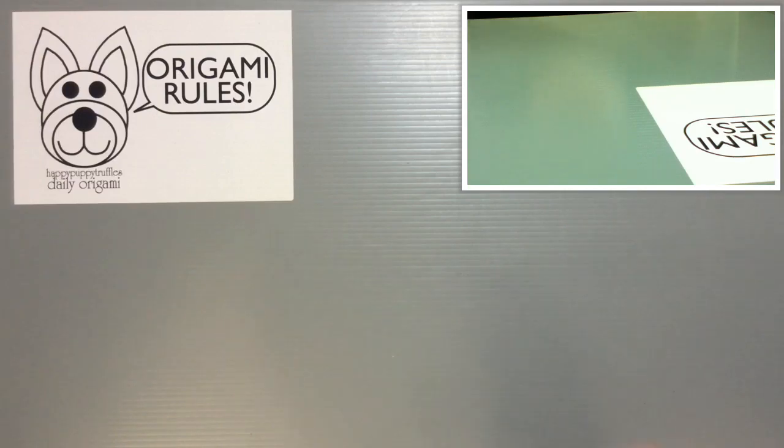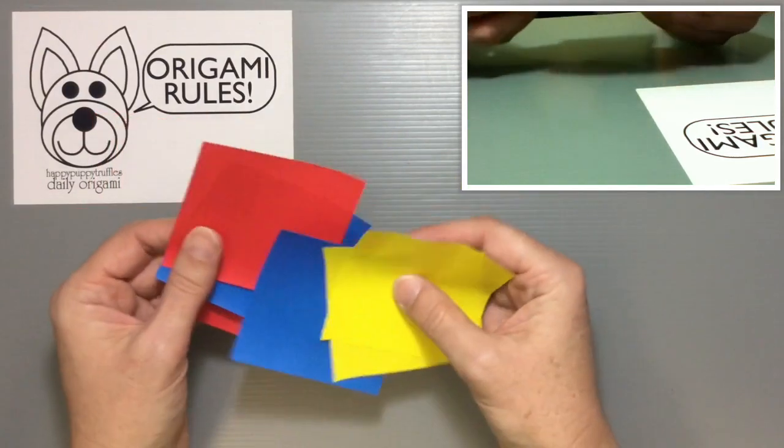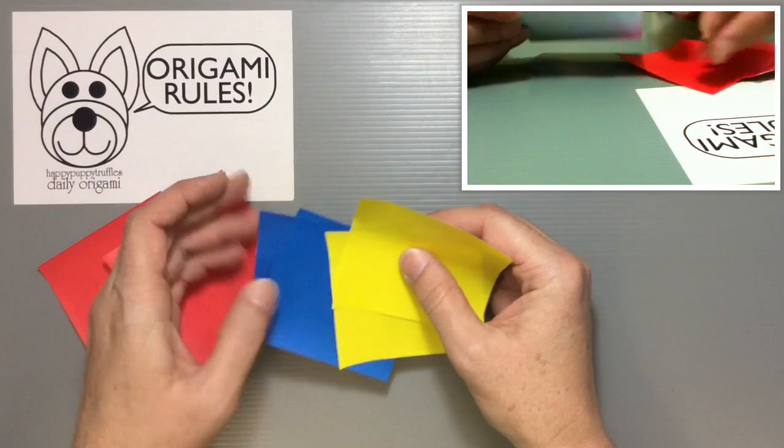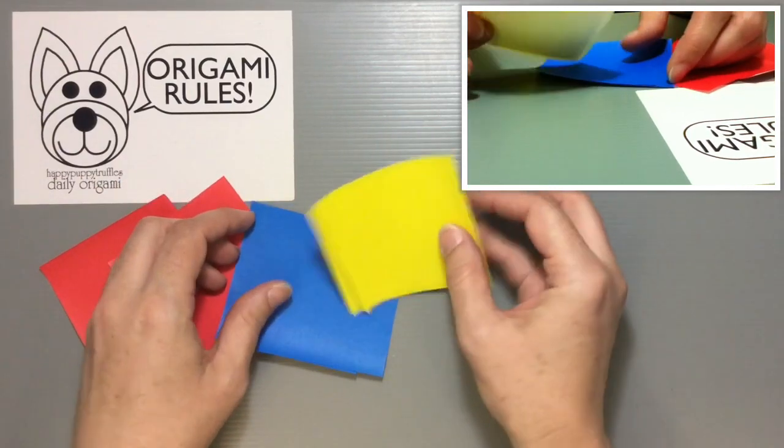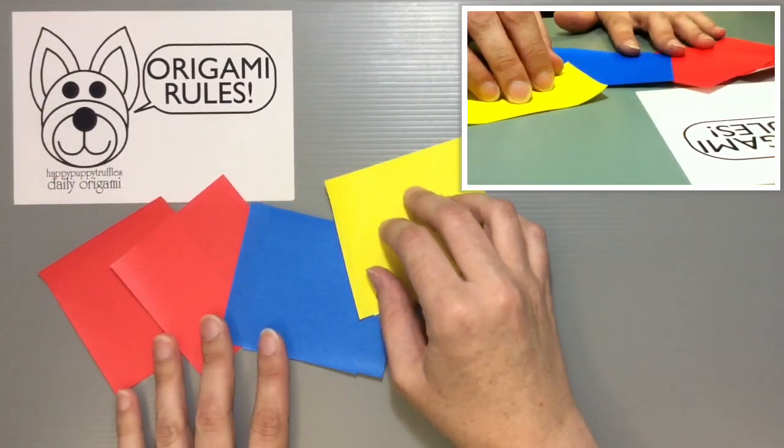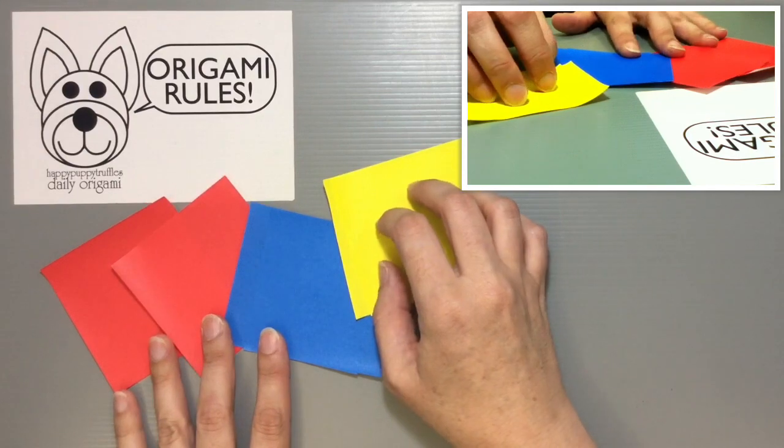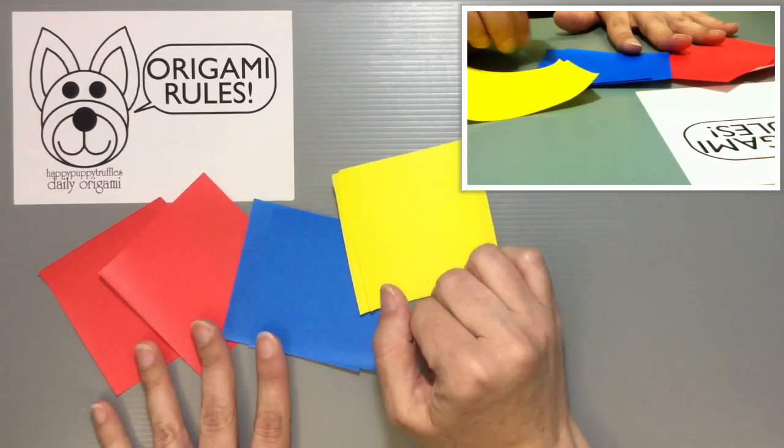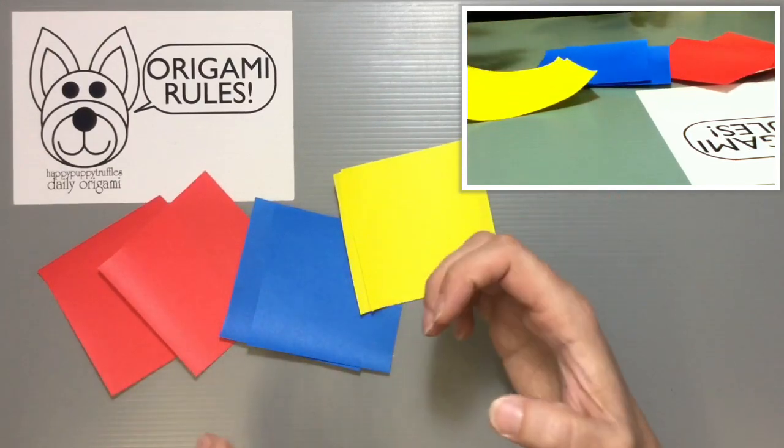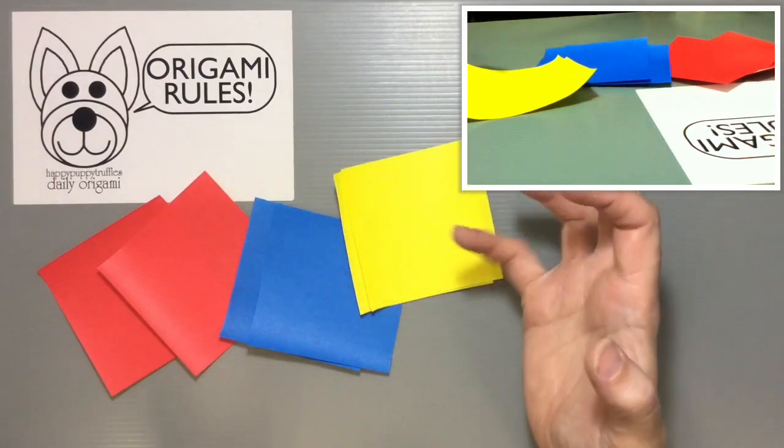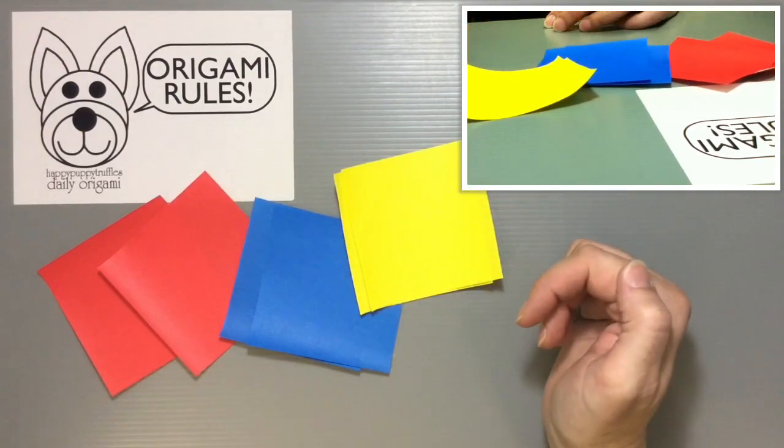For this origami you actually need six sheets of paper, and I would recommend using paper that's a fourth the size of regular traditional origami paper. So this is seven and a half by seven and a half centimeters. You could use larger pieces, but this really is the easiest for when you put everything together at the end, so I wouldn't try too big. This is probably a good size to start off with.